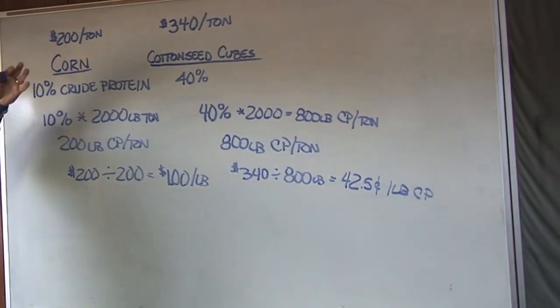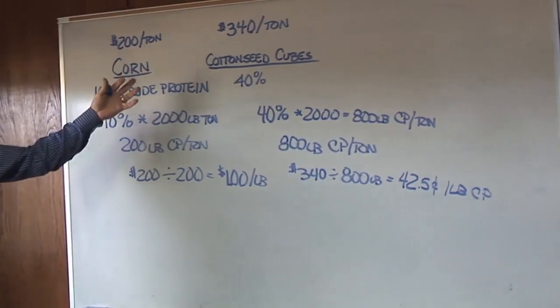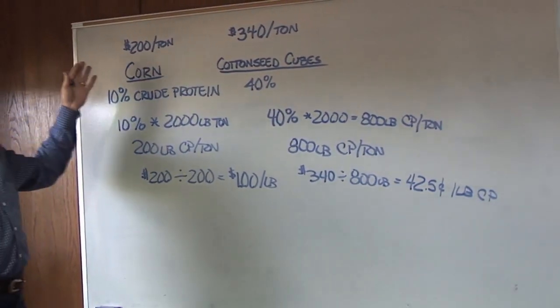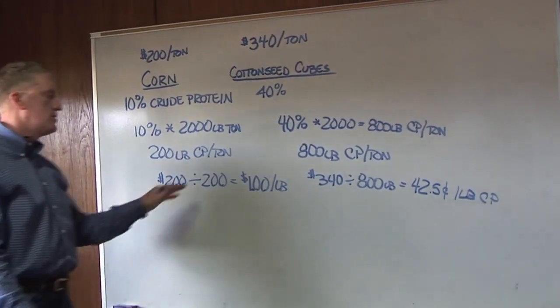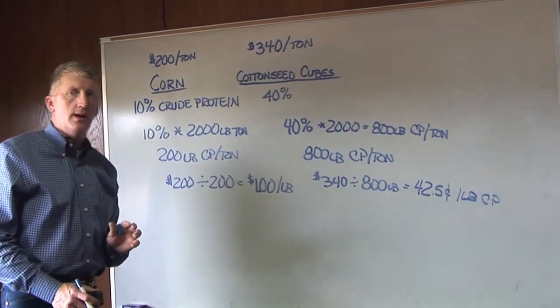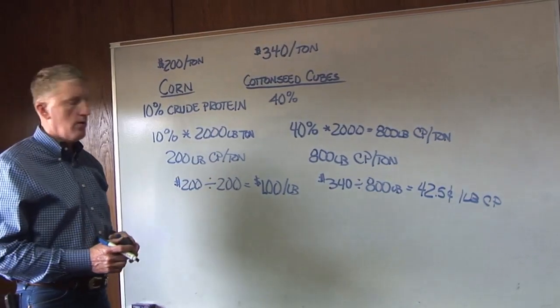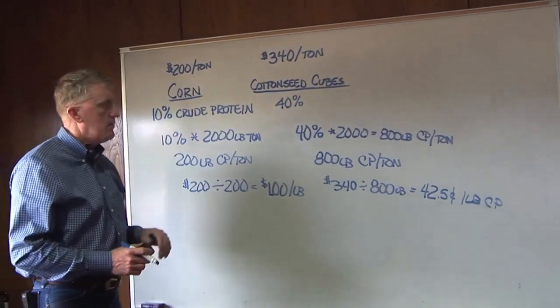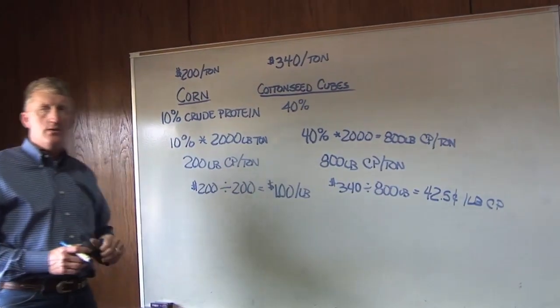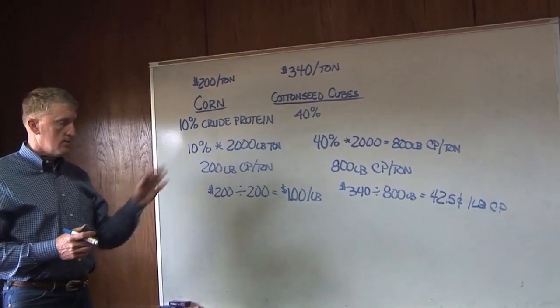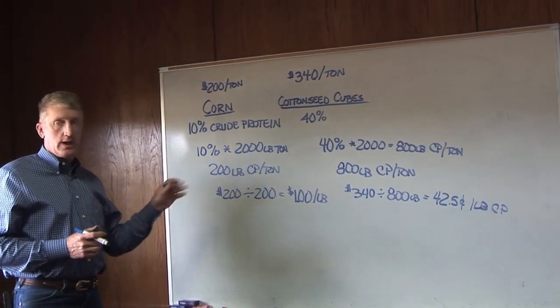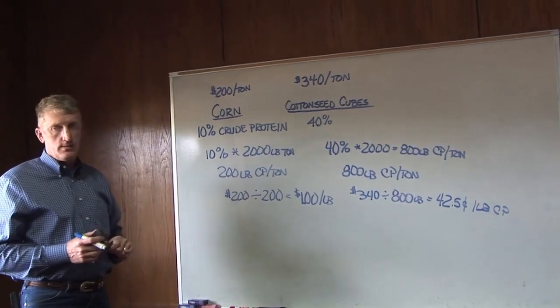We did this for protein, you could do it for energy, you could use TDN content, you could do it for the minerals, you can do it for any particular nutrient. But this allows you to identify the primary limiting nutrient for a supplementation program. And then you can go in and compare feeds on a dollars per pound of that nutrient basis to help you make a more economical decision in terms of what will be the most cost effective supplement to meet that first limiting nutrient.